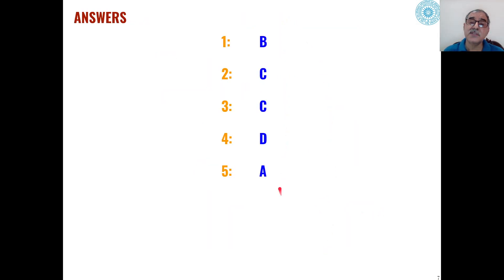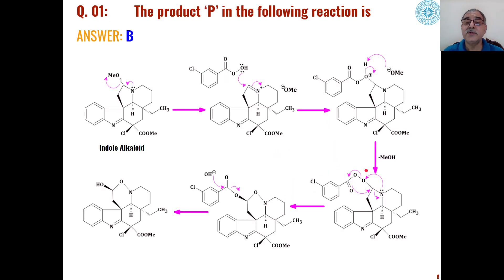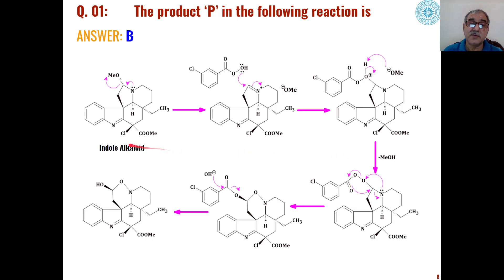Our answers are: B for the first question, C for the second, C for the third, D for the fourth, and A for the fifth. We will now see one by one how these products are formed.